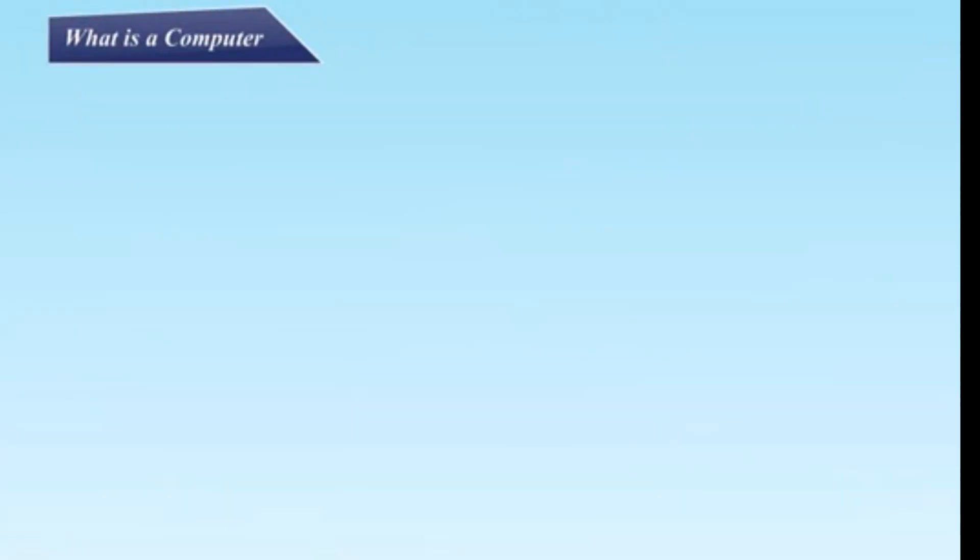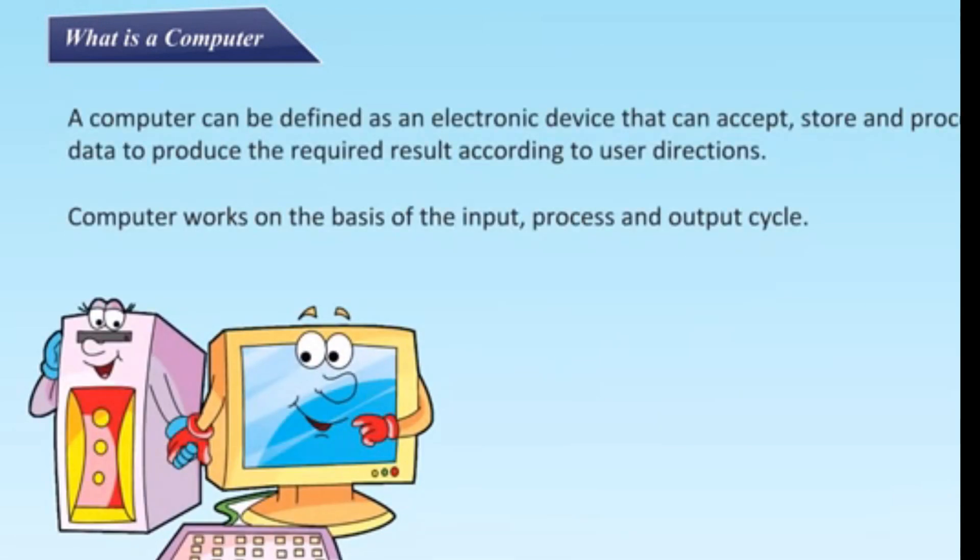What is a computer? A computer can be defined as an electronic device that can accept, store, and process data to produce the required result according to user directions. Computer works on the basis of the input, process, and output cycle.